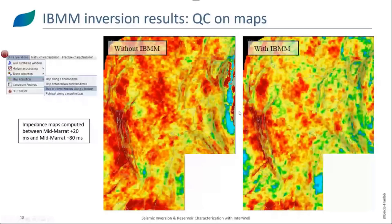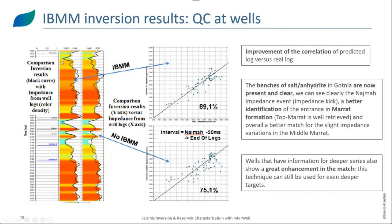Let's check the QC at the wells. On the left-hand side, we have a comparison of inversion results (black curves) for two wells with the initial impedance logs in color. We can compare the results for the IBMM option versus without IBMM. We observe an improvement of the correlation from 75 to 89 percent — a better prediction of the impedance with the IBMM option. Additionally, wells that have information for deeper series are showing a greater enhancement in the match between acoustic impedance after inversion and the measured impedance, meaning this technique can still be used for even deeper targets.